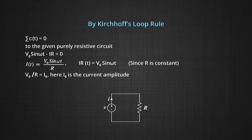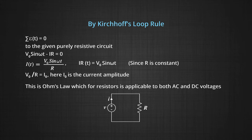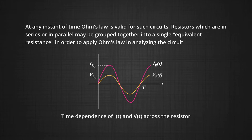Here I₀ is the current amplitude or peak value. Ohm's law for the resistor is applicable for both AC and DC voltage. At any instant of time, Ohm's law is valid for such a circuit — resistors in series or parallel may be grouped into a single equivalent resistance. We can see the phasor and the variation of I and V with respect to time, where both I and V start from zero.